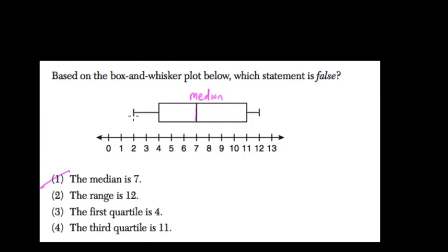The range is 12. Well, this number is the lowest, or the minimum value, and this number is the highest, or the maximum value, and that's from 12 to 2, so the range is actually 10, so that's false.